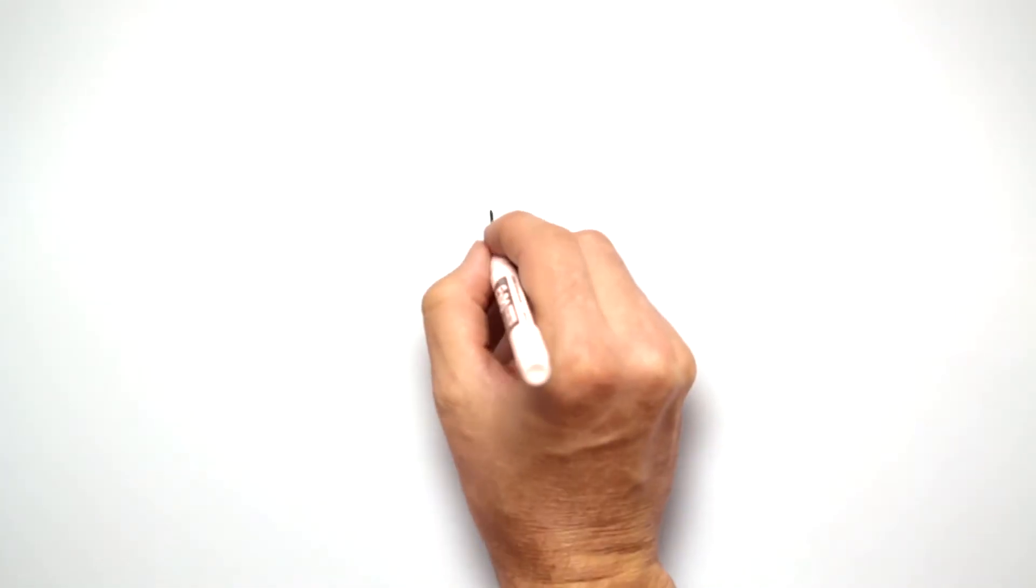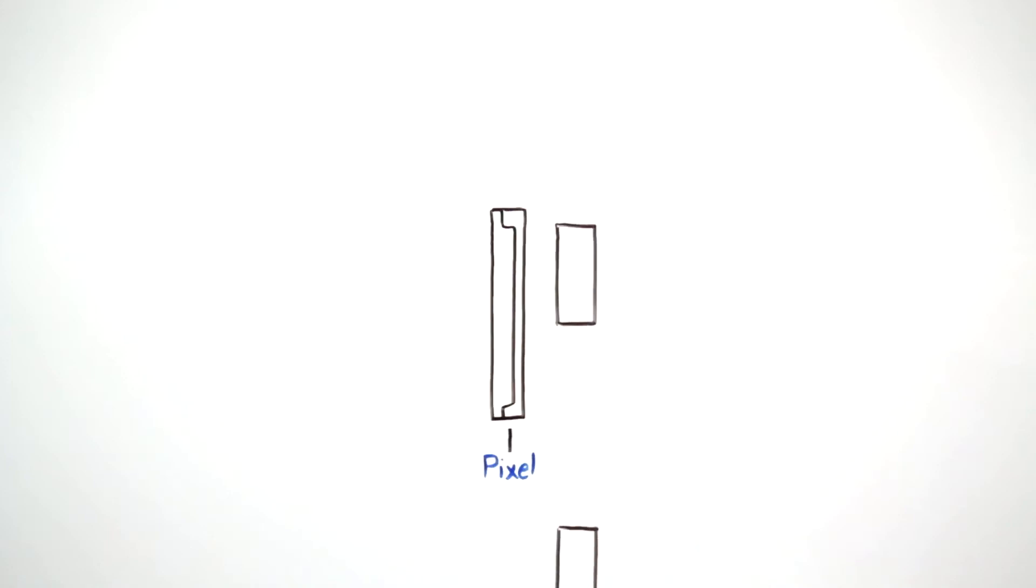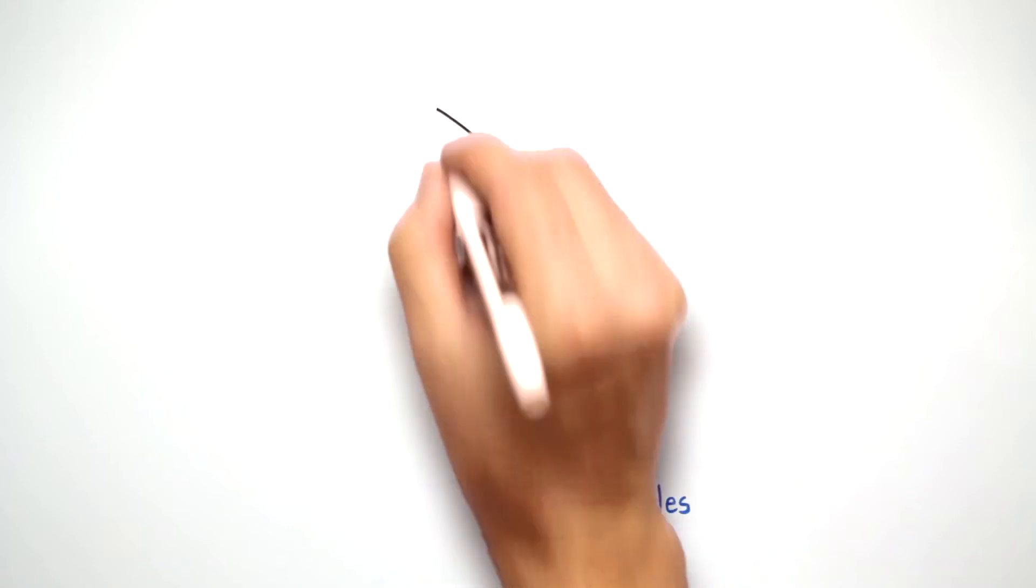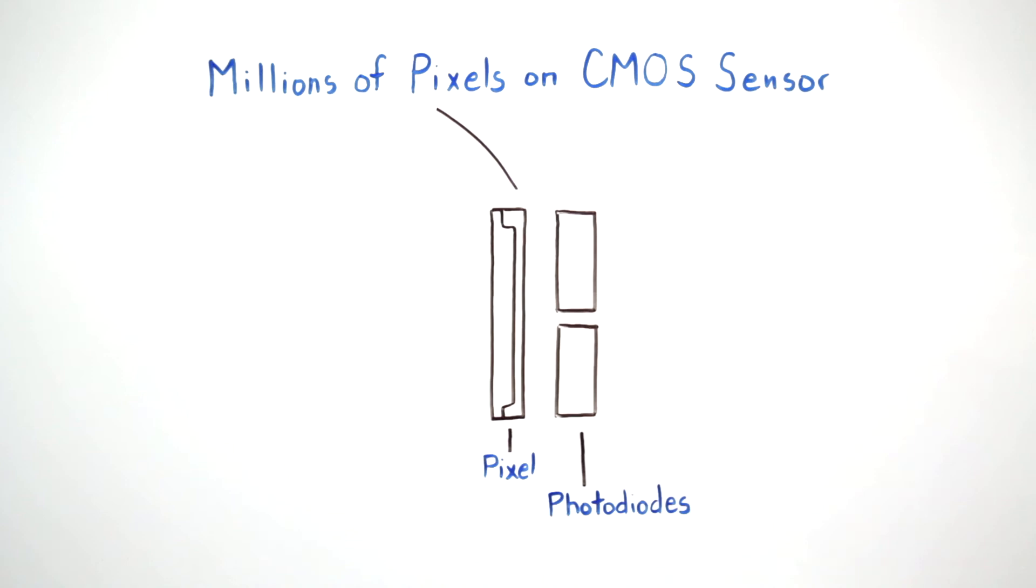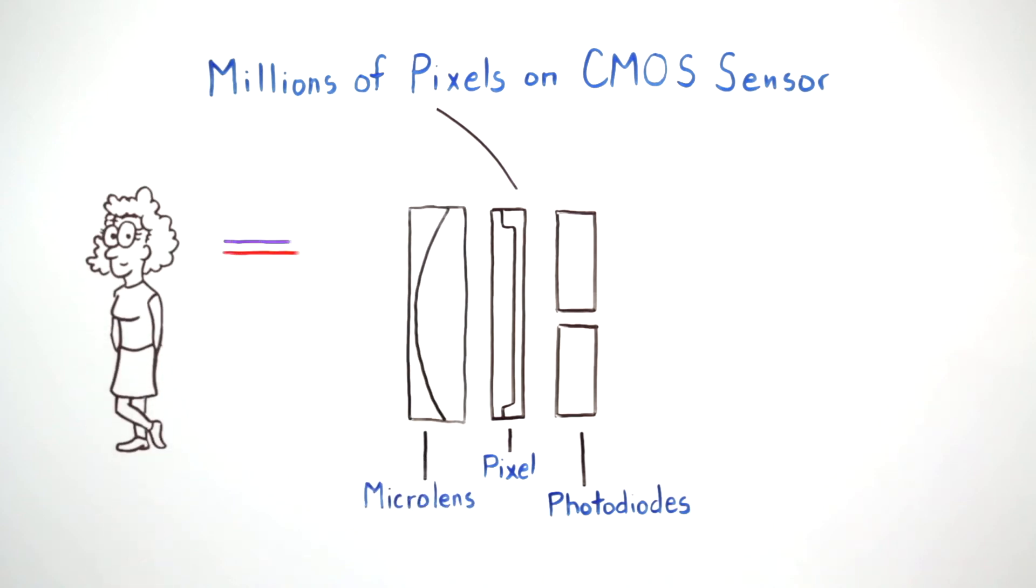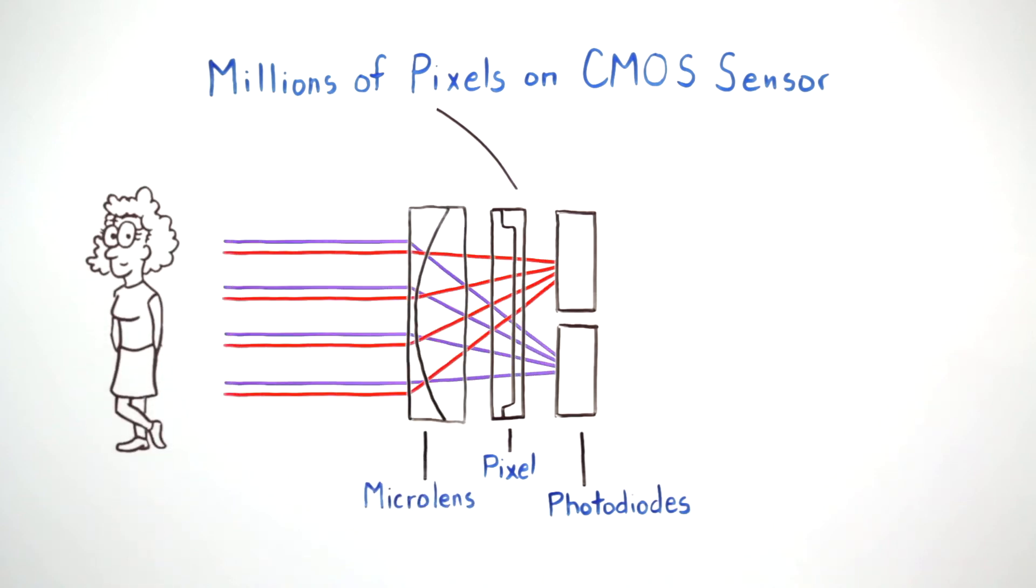The key to this capability stems from each pixel having not one, but two light sensing photodiodes. The optical image is projected onto the millions of pixels of the image sensor, each pixel having a tiny microlens that focuses the light samples onto the two photodiodes.